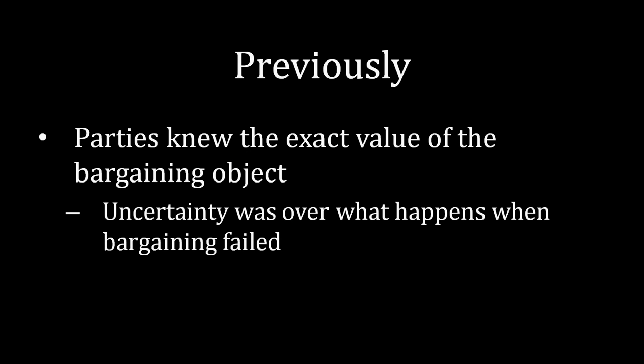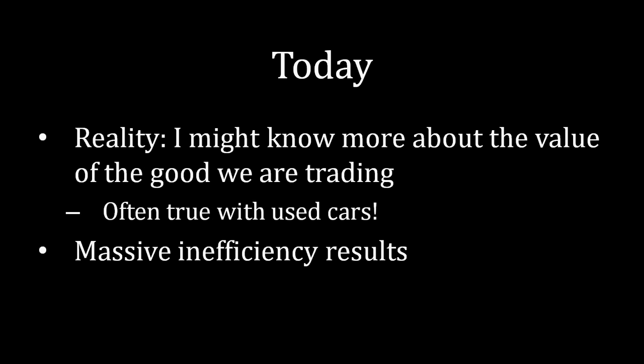Previously in this unit on uncertainty, parties have known the exact value of the object they are bargaining over. Instead, the uncertainty was over what happens when bargaining failed — that might mean whether the labor union is capable of weathering a strike, or whether I have the ability to get a high-paying job if I leave your company when we are negotiating a pay raise. However, it's not always true that parties know the exact value of the bargaining object. It may be that I know more about it than you do when you and I are trading that good.